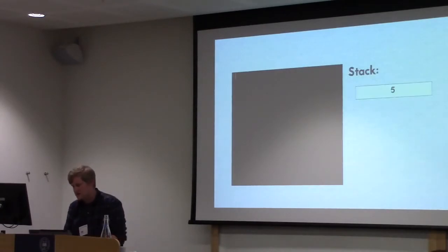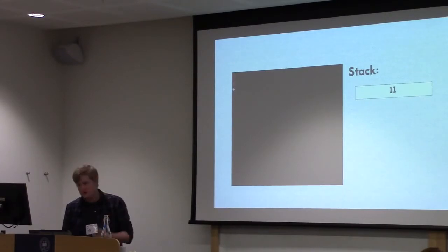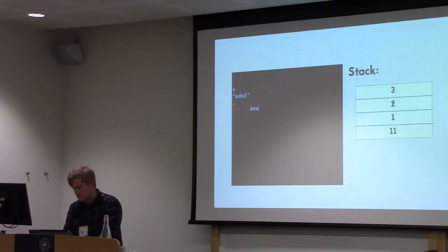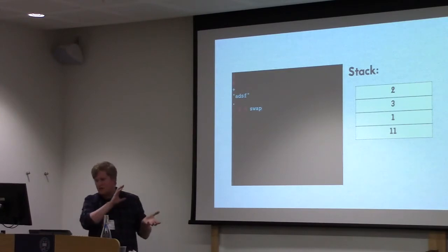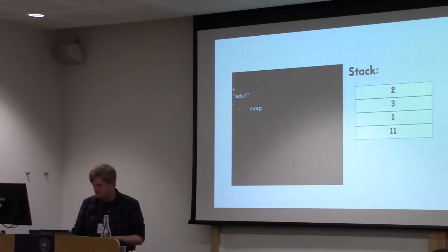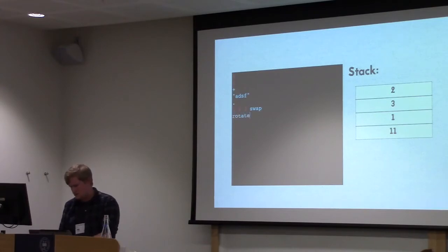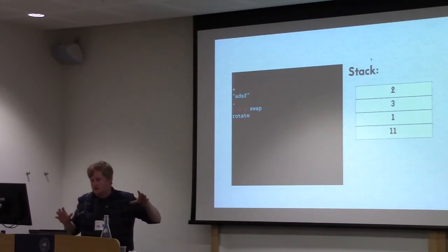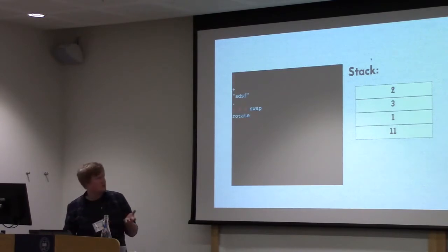So it would look kind of like this. You can push a 5 on the stack and a 6 on the stack and add them together. You can put a string on there, take things off the stack and put something else back. You can swap the top two elements of the stack, rotate the top elements, and so on. This is kind of the core of any concatenated language — if you only care about what's on the stack, you won't do something else.